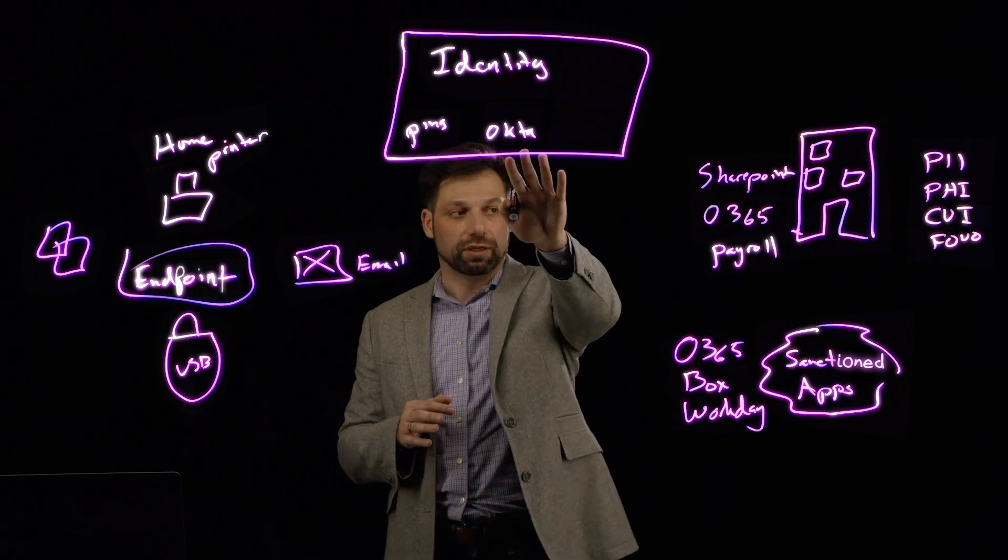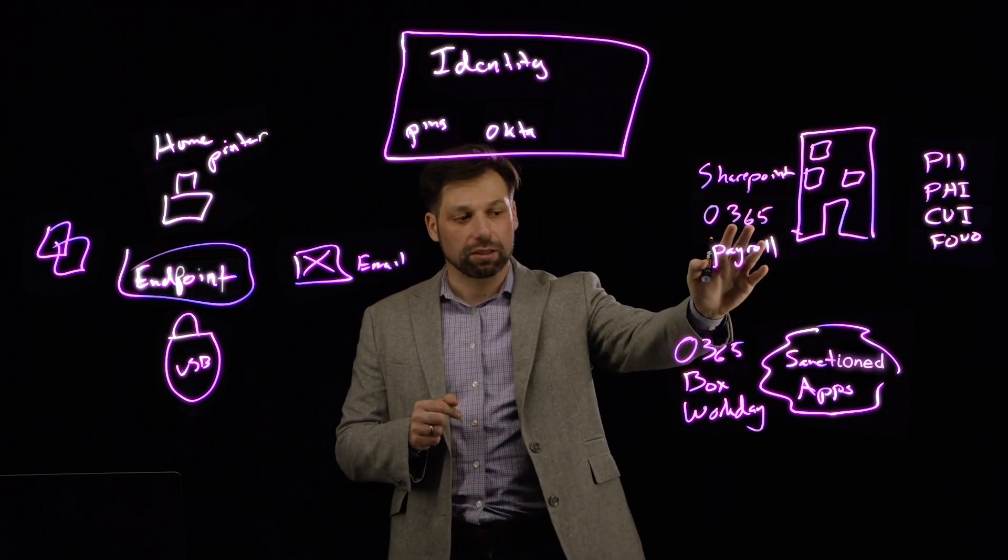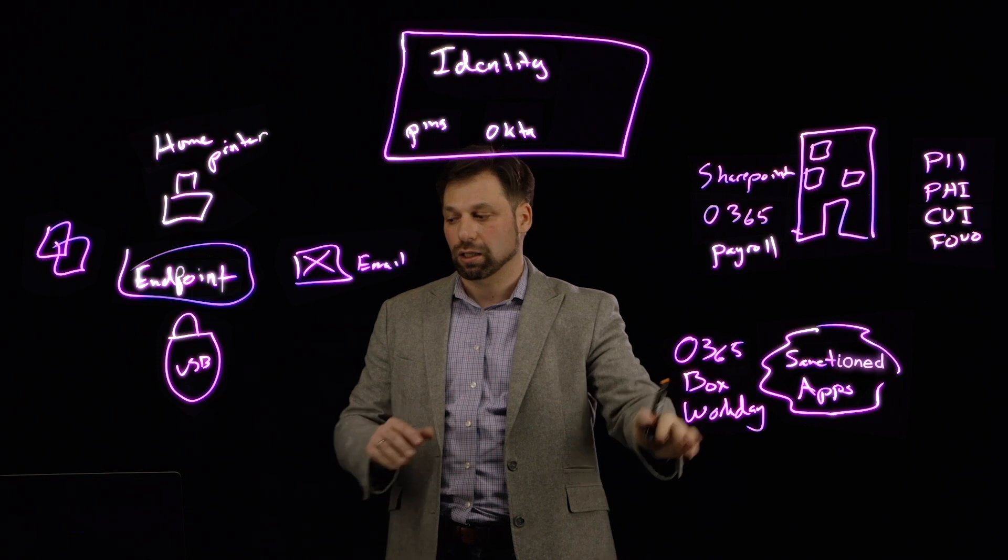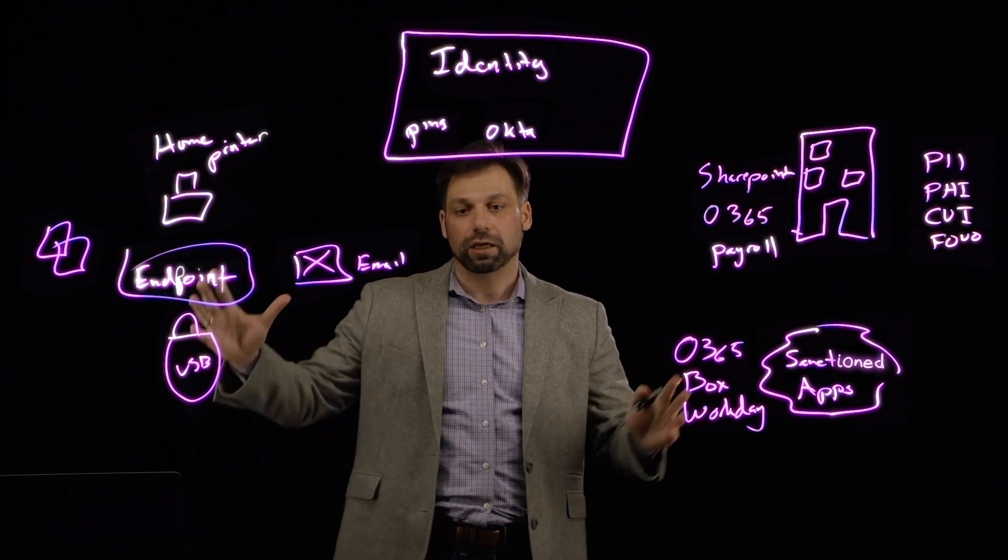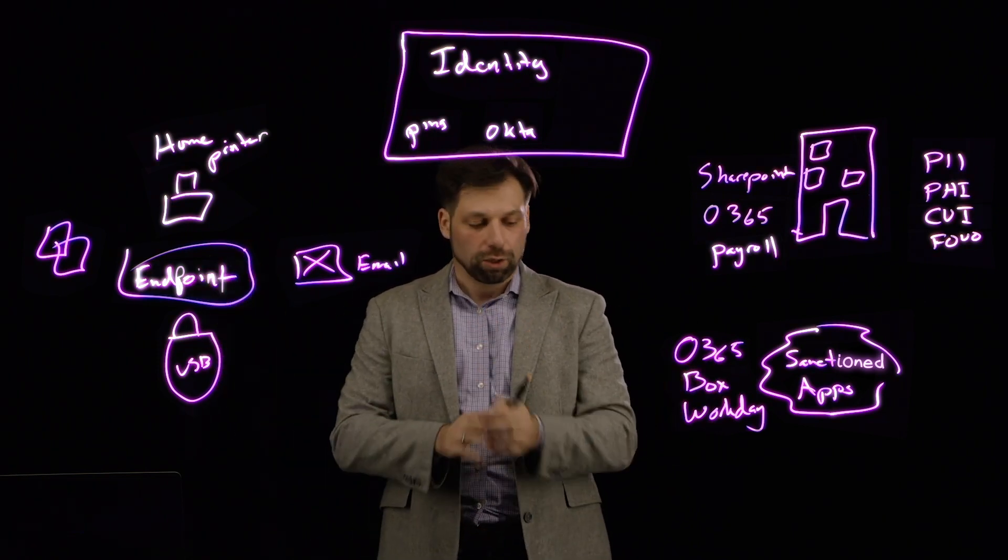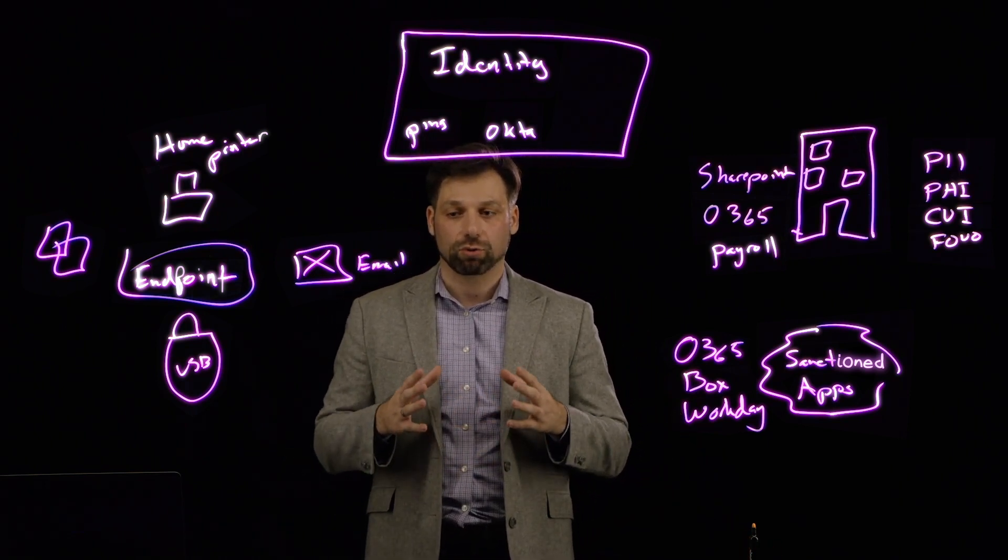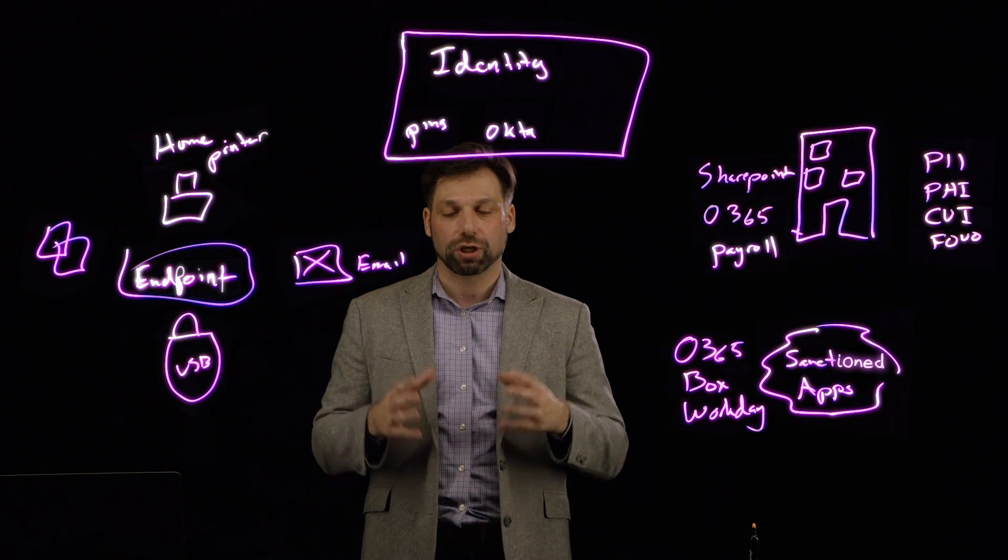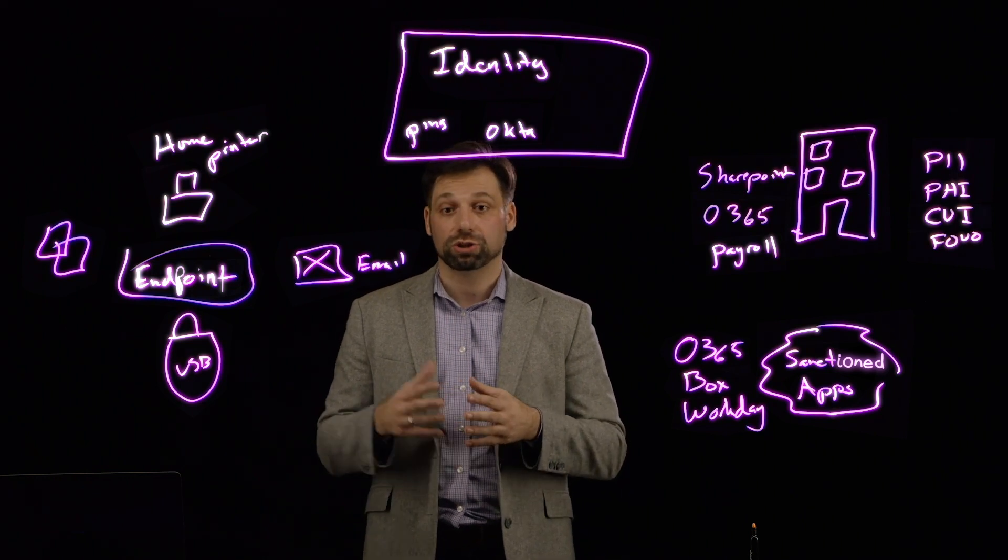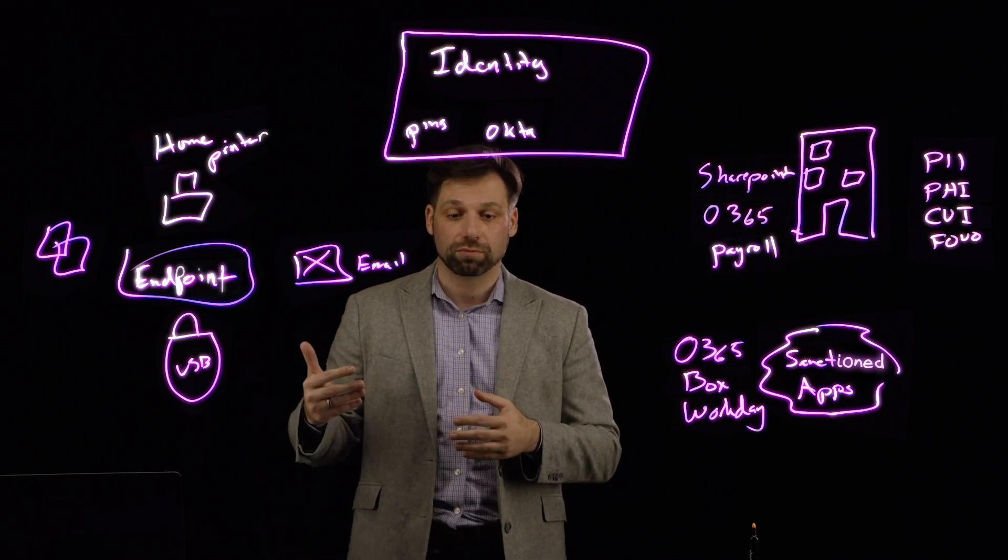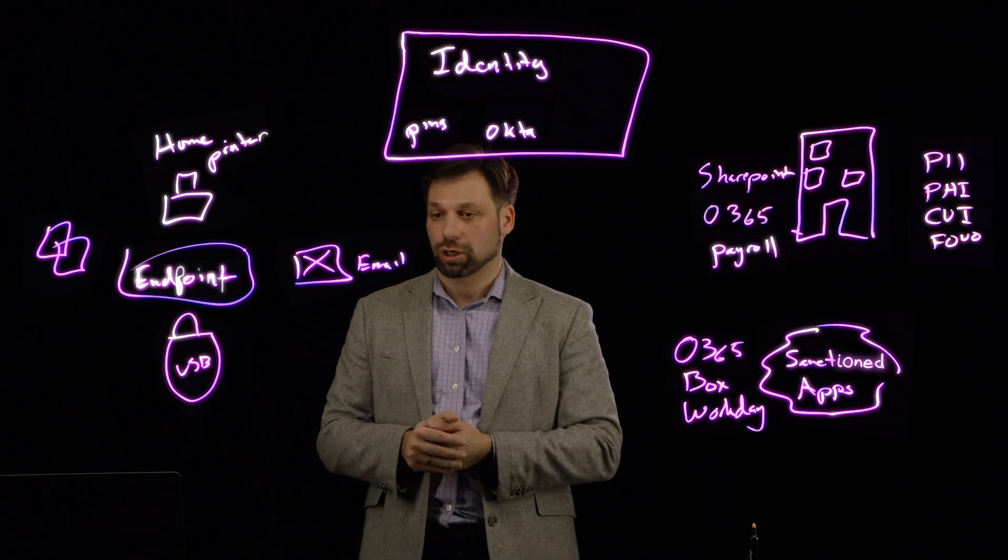We have to start looking at a couple different elements. We've got the identity piece figured out. We have to start looking at tagging the data, understanding what applications they're accessing, and what endpoints they're coming from. If we bring all that together, we can actually start looking at doing a user entity behavior analysis, meaning we can start monitoring the user and figuring out, is John who John really says they are? Or is it someone pretending to be John, like their children, or an external threat?